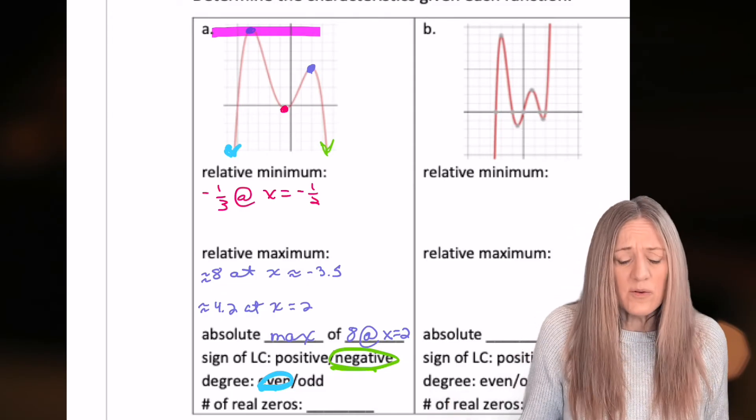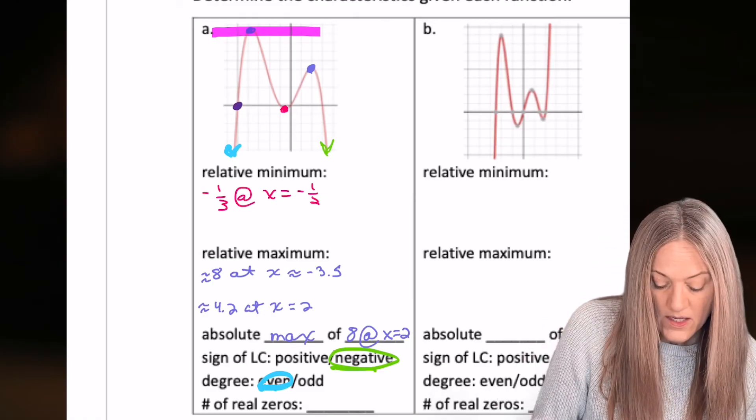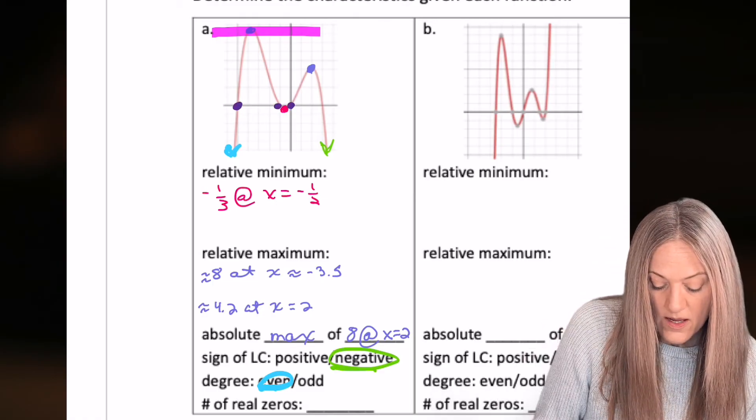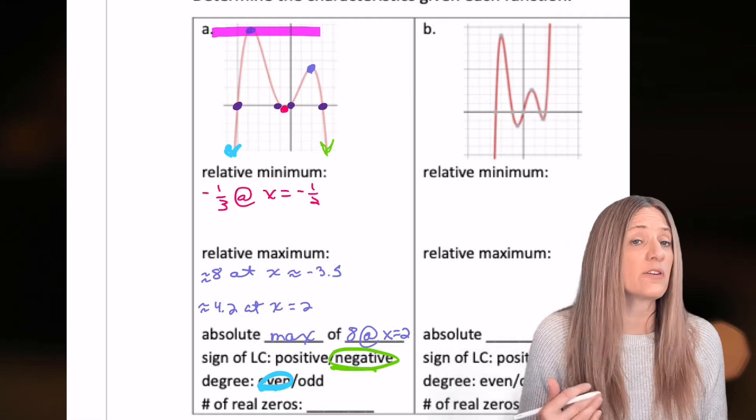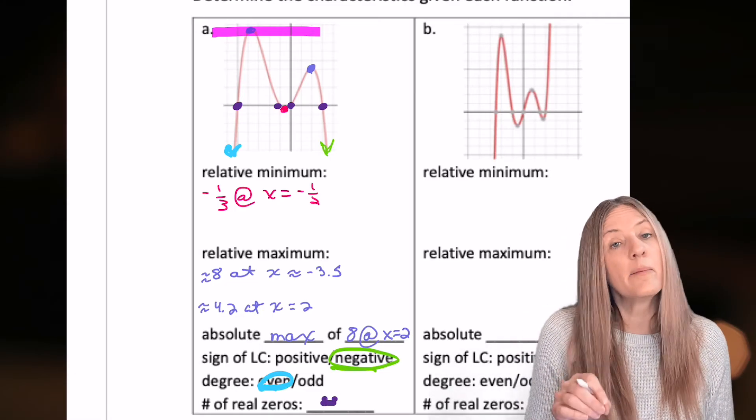Last, how many real zeros are there? One, two, three, four. Be really careful looking at that. How many times does the graph cross the x-axis? That's the number of real zeros.